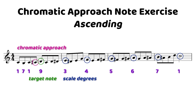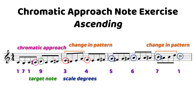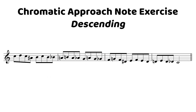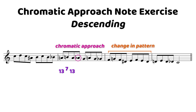You can also see that when we have only a half step between scale degrees — you can see that there in measure two between the E and the F — we're having to change up the pattern just slightly, and this happens again between the seventh and the root note. Our descending version is basically the ascending version just flipped upside down. We start on the scale degree, we move up a step before falling back down to the scale degree, and then we have that chromatic approach note in between, this time leading down. When you have a half step between the two scale degrees, we have to change the pattern in those similar spots once again.